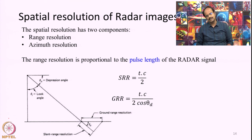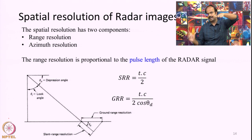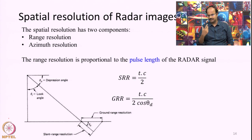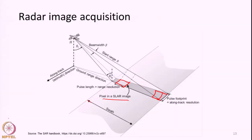Range resolution is the dimension of each pixel in the range direction — the length of each pixel in the range direction. Azimuth resolution is the pixel size in the azimuth direction. The concept of resolution is that if there are more features within one pixel element defined by this range and azimuth resolution, whatever features are present within the same pixel element will produce one single power return — that will be recorded as one single power value.